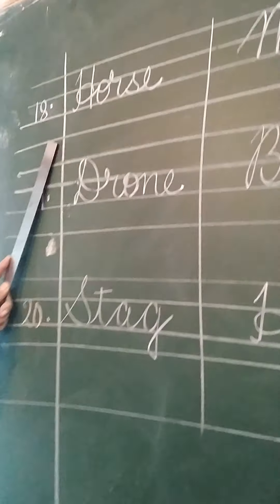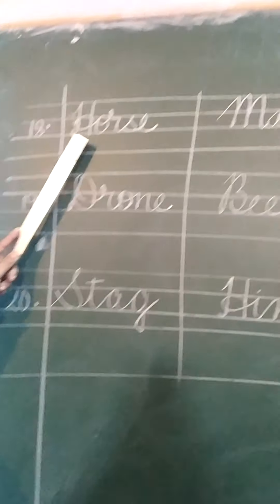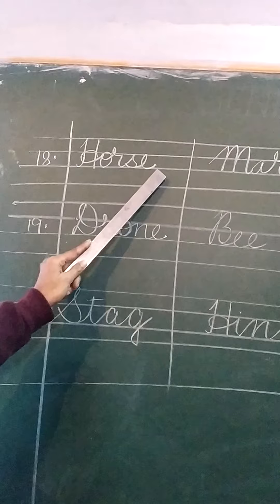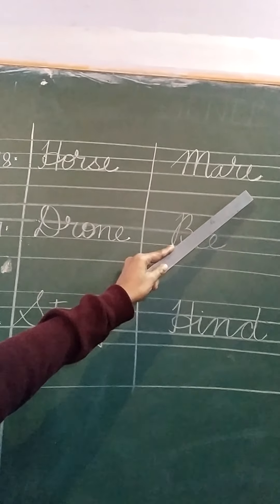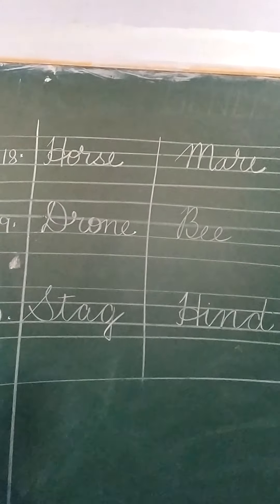Number 18 is horse. H-O-R-S-E, horse. And the female of horse is mare. M-A-R-E, mare.